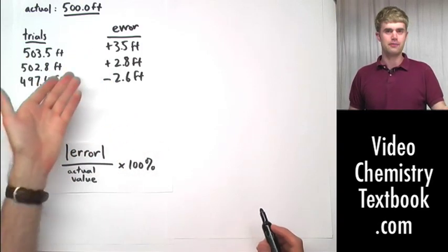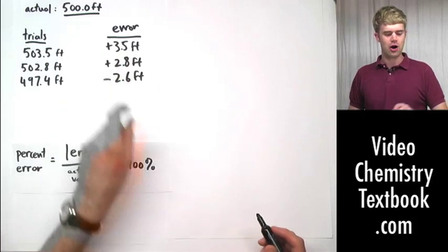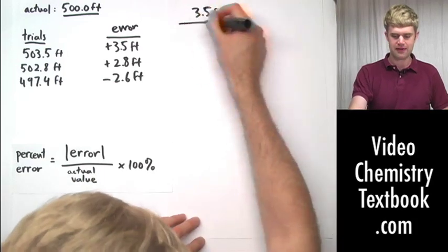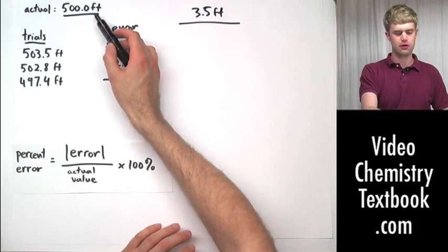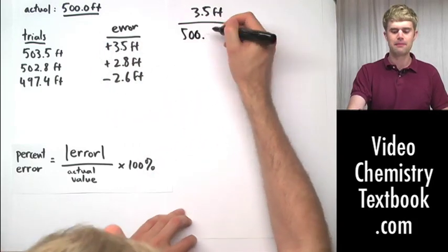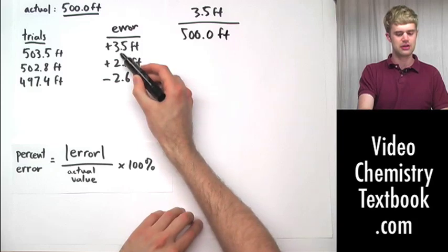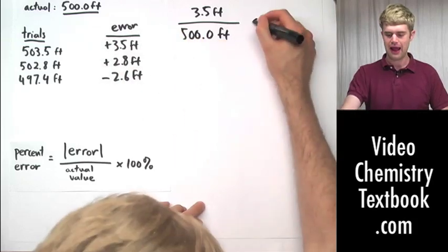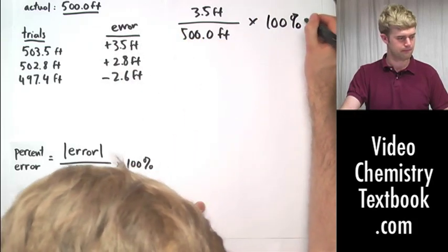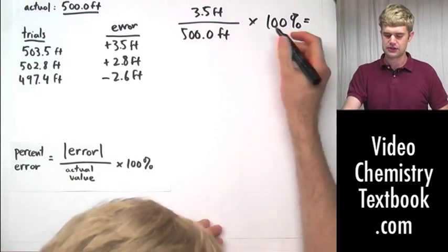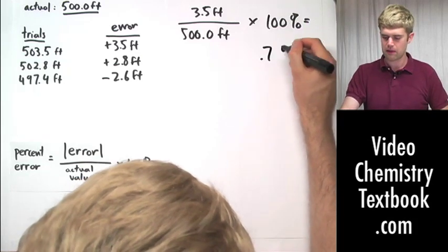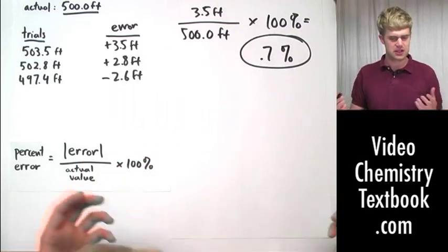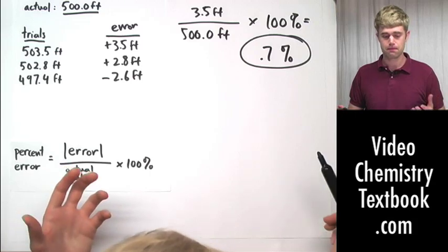Let's look at the percent errors for a couple of these trials here. So right here, we had an error of 3.5 feet. And we'll divide that by the actual value, which was 500.0 feet. Remember that this is the actual value. Sometimes people make the mistake of taking 3.5 and dividing it by 503.5. Don't do that. It's 3.5 divided by the actual. And then we'll multiply that by 100%. The final answer that we're going to get is 0.7%. That's the percent error. We're off by 0.7%. So that's not really a huge number.